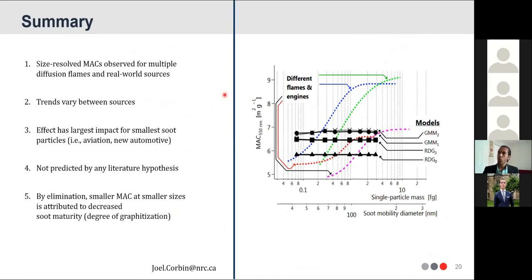So to summarize, we've observed the size-dependent MAC for multiple different diffusion flames and real-world sources. We've seen trends that vary between sources, as I just said. This effect would have the largest impact for smallest particles, of course, and that means aviation soot emissions and emissions from newer automotive vehicles. None of the literature hypotheses that I identified predict this size dependence of MAC, and therefore this must be attributed to a decrease in soot maturity for smaller sizes. Thanks for your attention. I welcome any questions or comments at my email here.